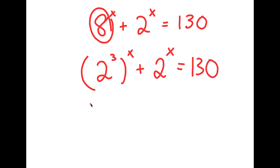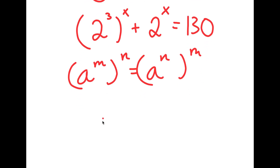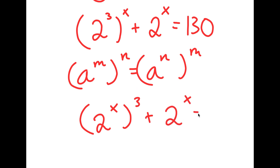Now, if I have something in the form a to the power of m to the power of n, this is equal to a to the power of n to the power of m. So these two are the same thing, meaning 2 to the power of 3 to the power of x, I can rewrite that as 2 to the power of x to the power of 3. And now I have this plus 2 to the power of x is equal to 130.